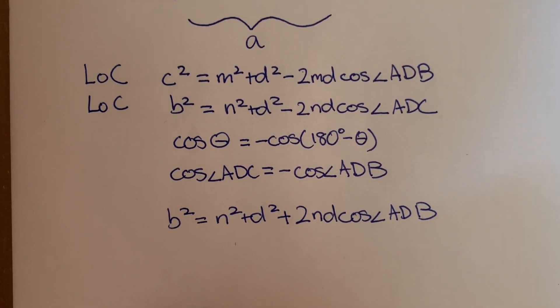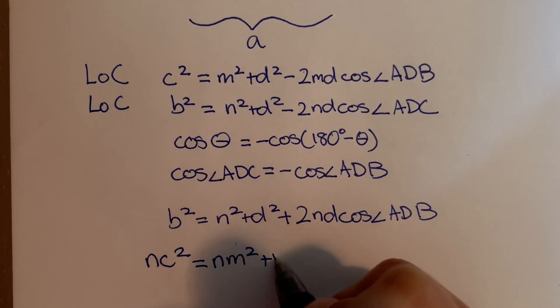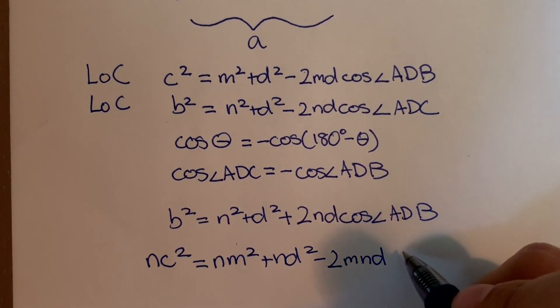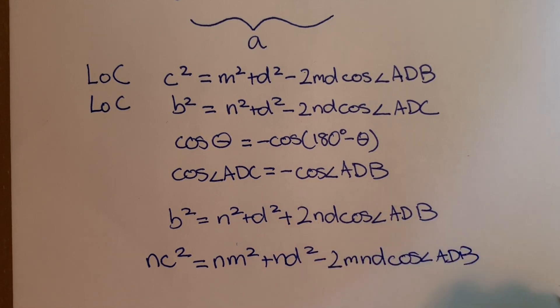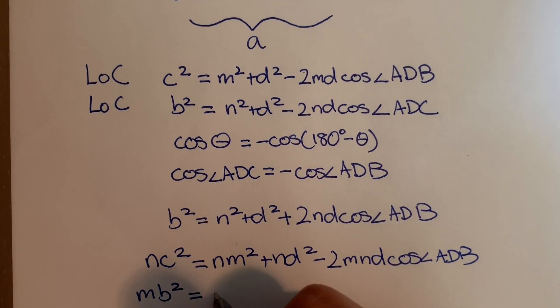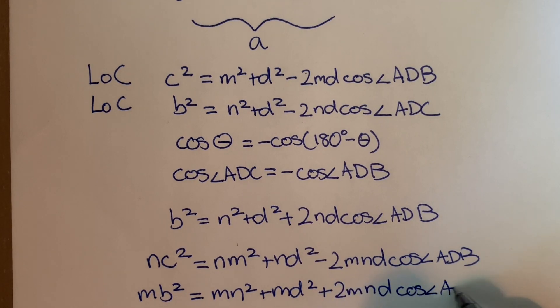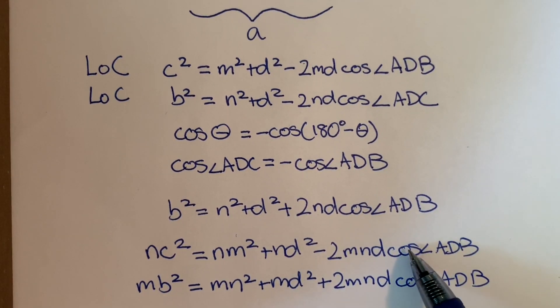So let's multiply the top equation by N. Now let's multiply the bottom equation by M. Since these two terms are exactly identical now, we can add them together and they'll cancel out.